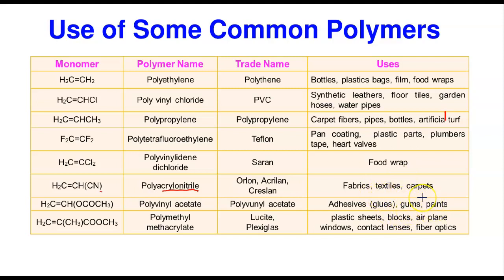Finally, methyl methacrylate forms polymethyl methacrylate — trade name Lucite or Plexiglass — used in making plastic sheets, blocks, airplane windows, contact lenses, and fiber optic cables. I advise you to know some of these uses because they can appear in exams as multiple choice questions. Know the uses, the polymeric units, and the monomeric units of these addition polymers.